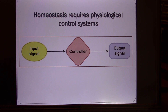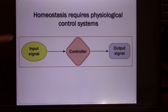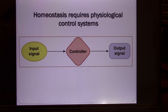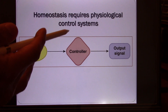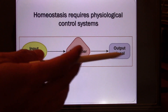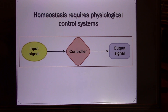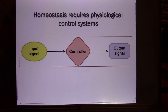Let's look at the homeostasis loop. You have an input signal — could be your body temperature. You will send it to the control center. The control center is in your hypothalamus. And if your body temperature is too high, it will go to the output. Output is your sweat gland, and the sweat gland produces sweat. When the sweat goes to the surface of your skin, it evaporates, it brings the heat away, so it lowers your body temperature.